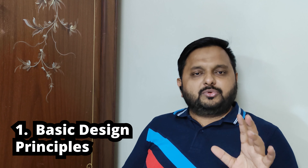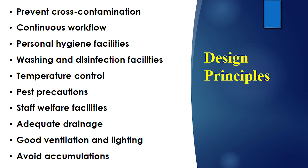Today we will discuss the top-level points so that as an employee you can understand how to take care of the design of the premises. Number one is cross-contamination. Number two is continuous workflow — we need to look at the process flow and design the premises as a linear workflow, starting from raw material to finish. The receiving area should not be near the cooking area; it should go from receiving to deboxing, cleaning, storage, then preparation and cooking.